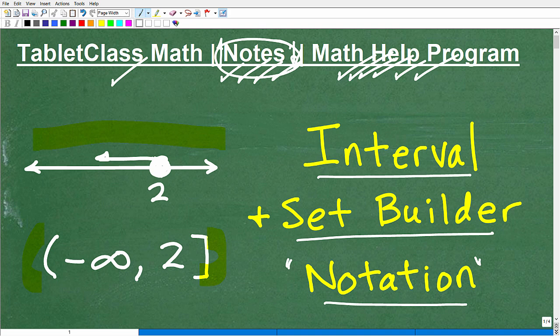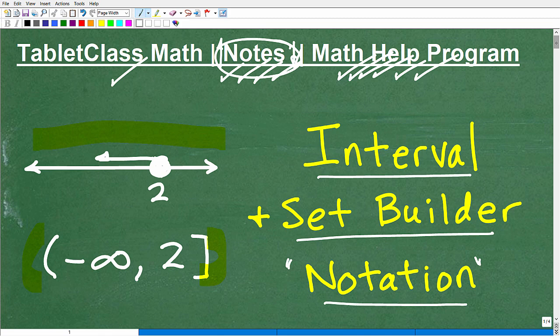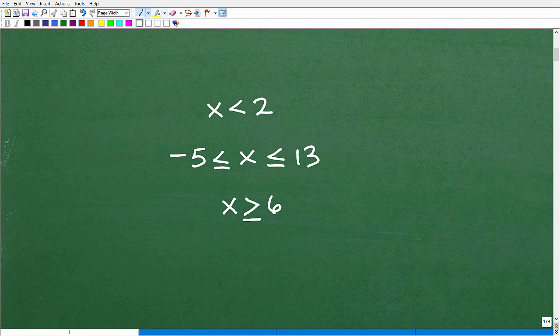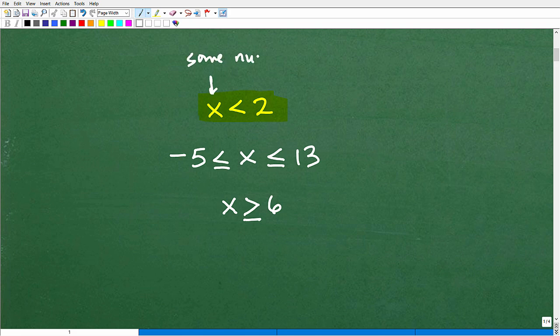Okay, so here we have an example of some interval and set builder notation. Let's go ahead and take a look at when we would be thinking about this. So here, for example, I have an inequality. So this says x is less than 2. But what does that mean? Well, it says x is some number. So it's some number. Let's write that out. It's some number.